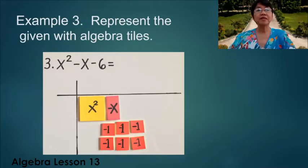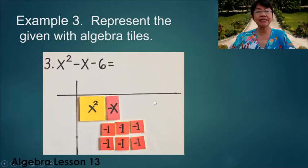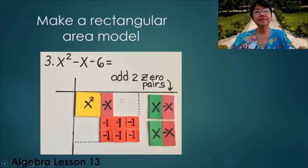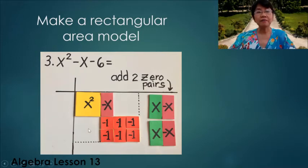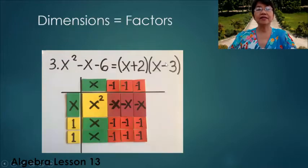Example 3: Represent the given with algebra tiles. We have x², negative x, and six negative unit tiles. Then we form a rectangle, but it seems we cannot form a rectangle because there are missing spaces. But that will be solved by adding two zero pairs. The factors are (x + 2) and (x - 3).